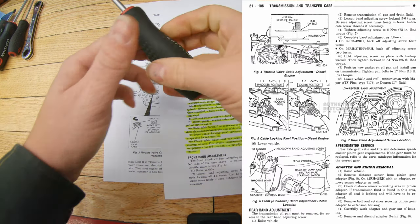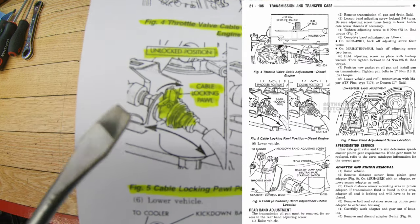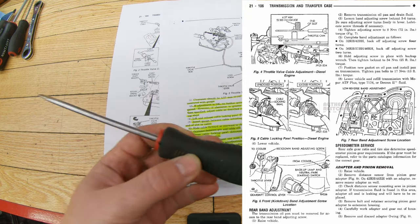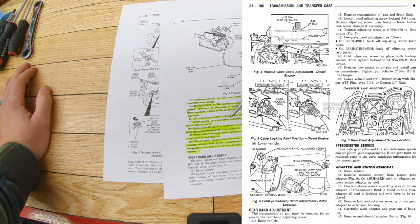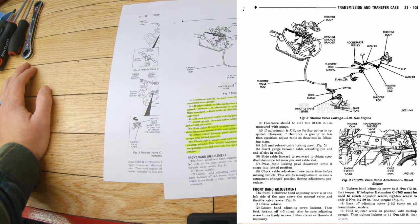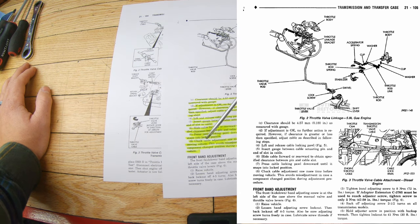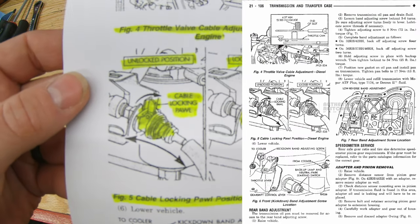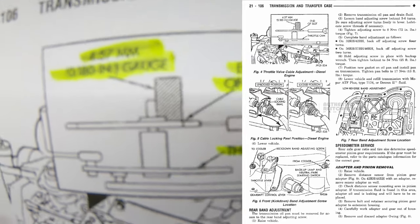If the adjustment is okay, no further action is required. However, if clearance is greater or less than specified, adjust the cable as follows: lift and release the cable locking pawl — when it's in the up position you can adjust it, then push it down to lock. Insert the gauge between the cable actuating pin and the end of the slot in the cable, slide the cable forward or rearward to attain the specified clearance between the pin and the cable slot, then press the cable locking pawl downward until it snaps into the locking position. Check the cable adjustment one more time before moving the vehicle to avoid misadjustment. Here's the diagram for the locking pawl and the throttle cam and slot.